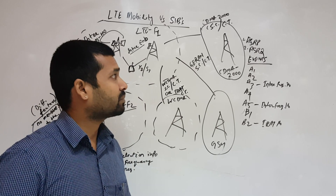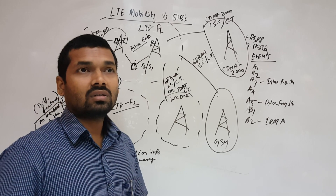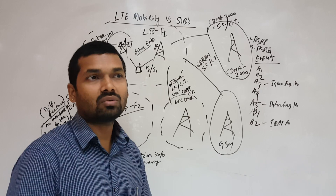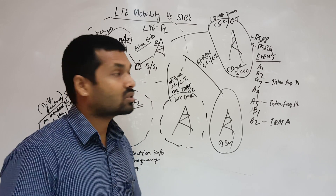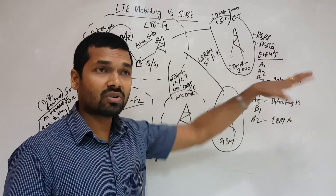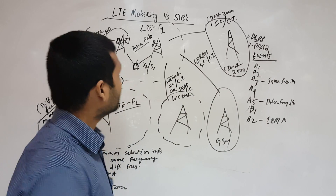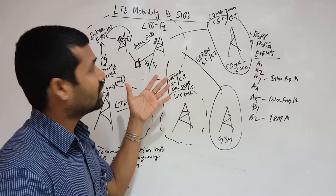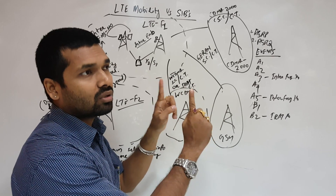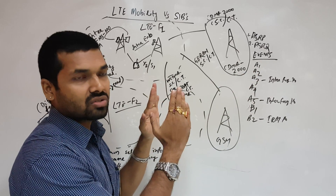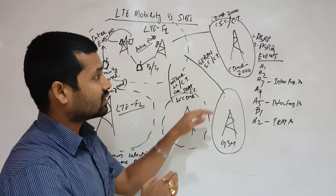First of all we need to understand when handover or reselection is required. When we are experiencing bad coverage from the nearest serving cell, or bad SINR, we start measuring other frequencies. There are events which trigger based on the coverage or quality experience of the LTE network. A2 is the triggering point — when our serving frequency quality drops below a certain threshold for a measured period of time, A2 is triggered, indicating we need to start measuring other frequencies, the same frequency, or other technologies via IRAT.